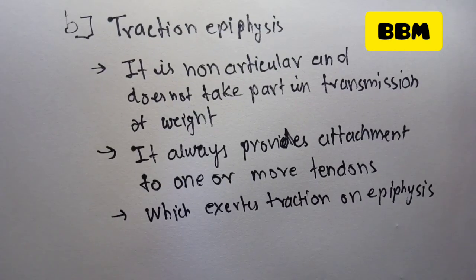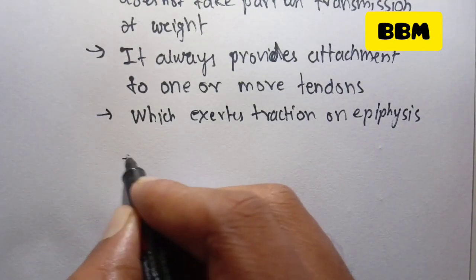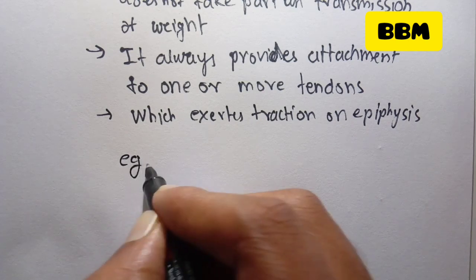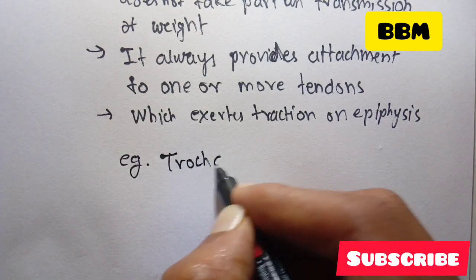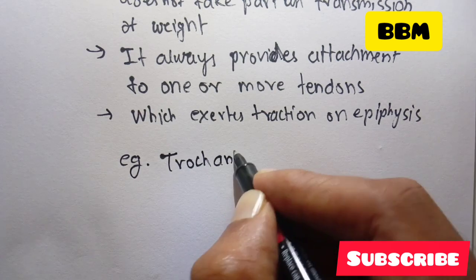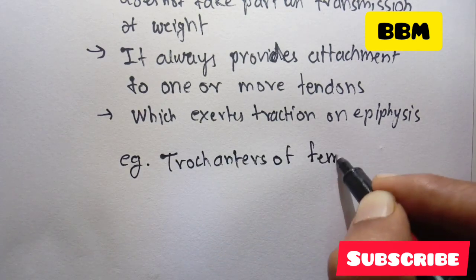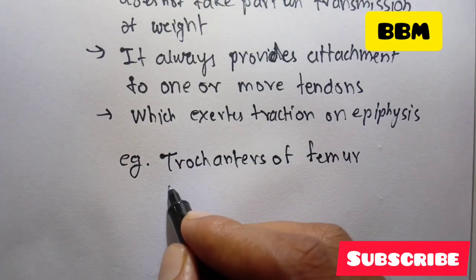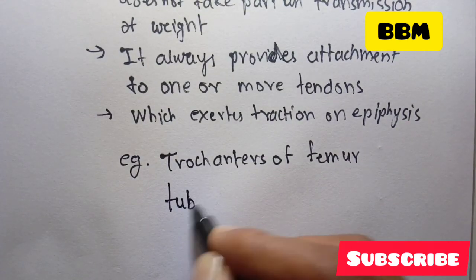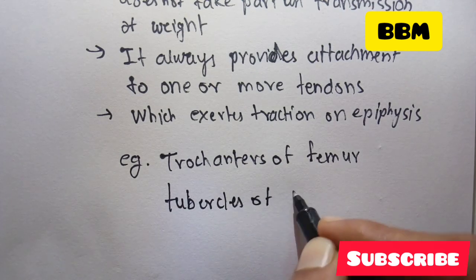Examples of Traction Epiphysis include the trochanters of the femur and the tubercles of the humerus.